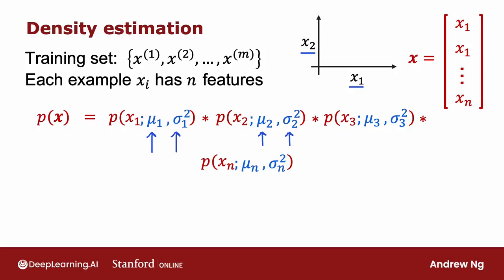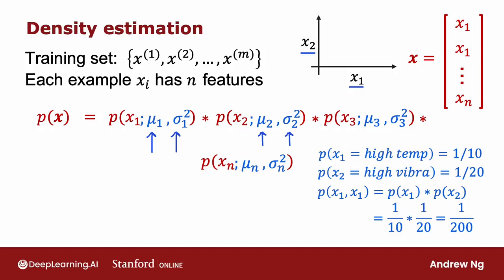In case you're wondering why we multiply probabilities, maybe here's one example that could build intuition. Suppose for an aircraft engine, there's a one-tenth chance that it is really, really hot, unusually hot. And maybe there is a one in 20 chance that it vibrates really, really hot. Then what is the chance that it runs really, really hot and vibrates really, really hot? We're saying that the chance of that is one-tenth times one over 20, which is one over 200. So it's really, really unlikely to get an engine that both runs really hot and vibrates really hot. It's the product of these two probabilities. The chance of both of these things happening, we're saying is the product of both of these probabilities.